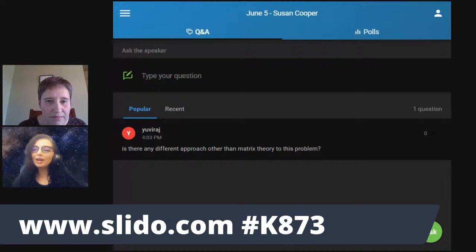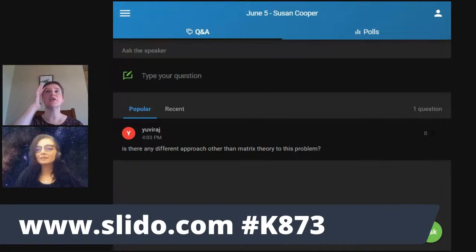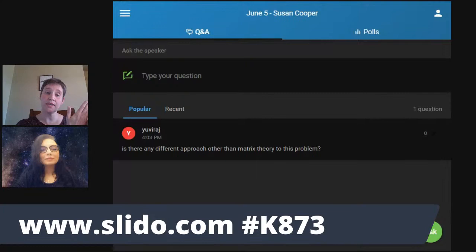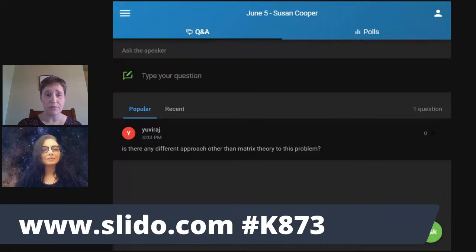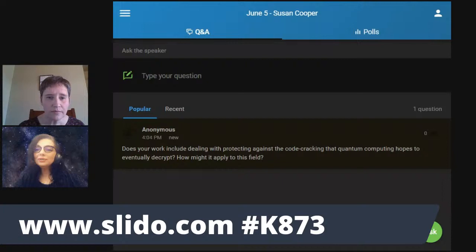Okay. Another question. Is there any different approach other than matrix theory to this problem? So, if you mean the problem of linear codes, I mean, the idea was matrix theory. So, yeah, so if you look at the talk again, so near the end, you'll notice that we were using the points in projective space and their multiplicities. So, if you deep down, and I didn't go into the details because there's not enough time to go into those details in a public lecture, but if you go deep down into that, we're not necessarily focused on the matrix itself, but we're looking at the properties of the points. And they're very geometric and algebraic.